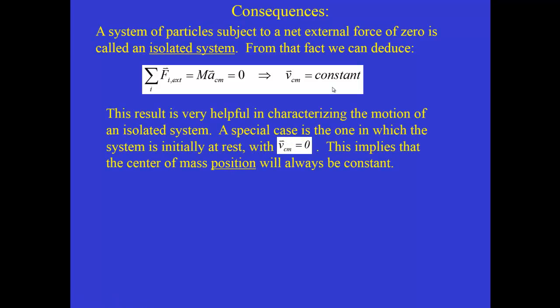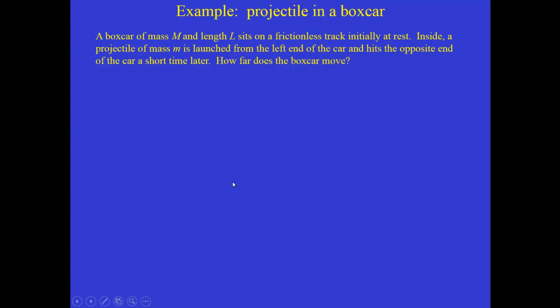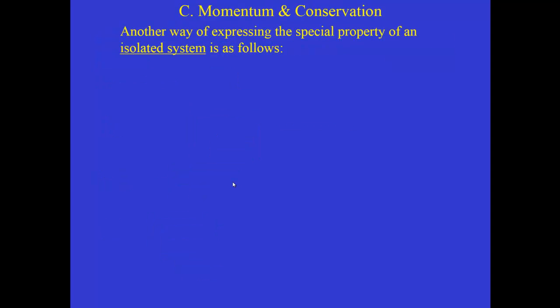This is a very useful result for characterizing the motion of an isolated system. A special case is one where the system is initially at rest, so its center of mass velocity equals zero. In that case, the center of mass will always remain at rest and its position will always be constant. A classic example is the canoe problem: if several people in a canoe move around and change places, the canoe itself will move, but in such a way that the center of mass of the system always stays at the same position. We'll work through an example of this using a boxcar problem in class.